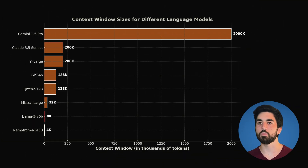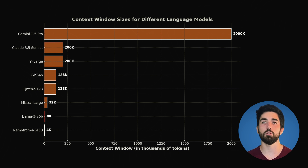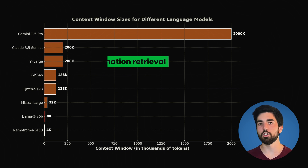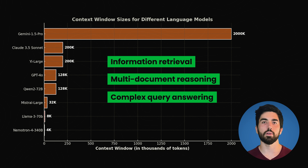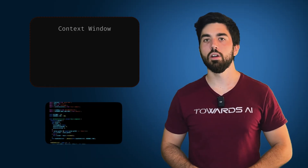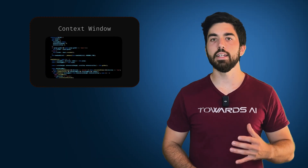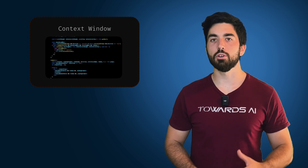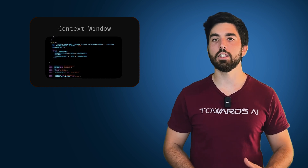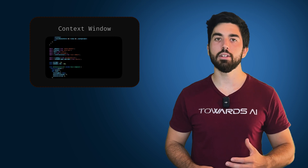This expanded context window enables LLMs to potentially perform tasks that traditionally require external tools or specialized systems, such as information retrieval, multi-document reasoning, and complex query answering — all within a single model. This is particularly valuable, for example, when feeding an entire codebase into context, where the model's understanding benefits from seeing the full repository and how it is connected.